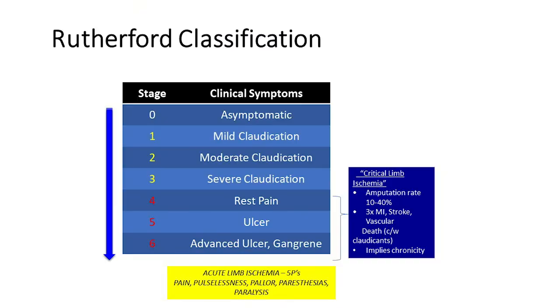Normally, with leg elevation at sixty degrees for one minute, the leg should return to normal color in ten to fifteen seconds. In patients with peripheral artery disease, it takes longer to return to normal. Ischemic tissue, ulceration, and gangrene may also be present. Using the Rutherford classification, Stage 0 is asymptomatic and Stage 6 is the most advanced with gangrene. Stages four, five, and six indicate critical limb ischemia, meaning the blockage is very severe.